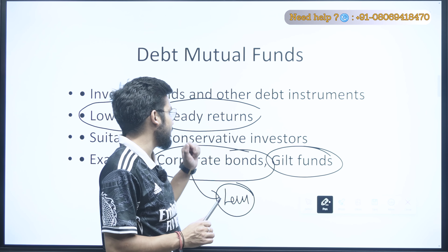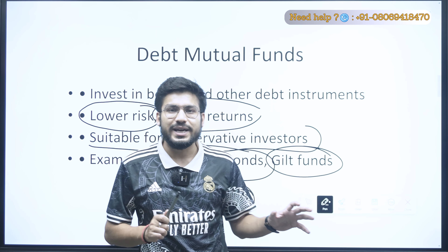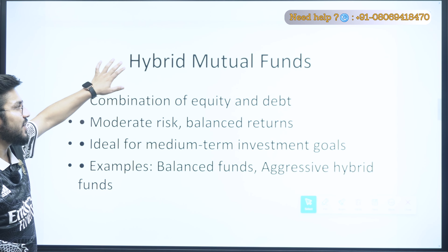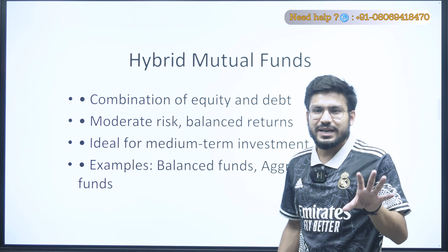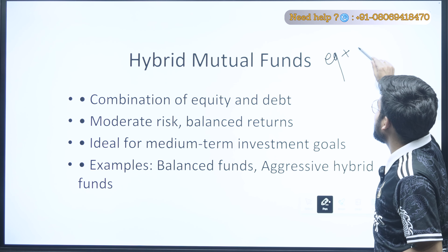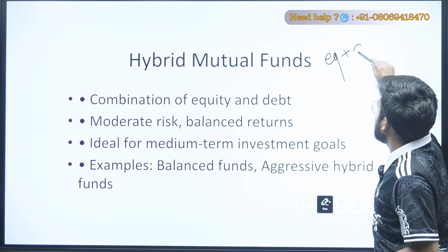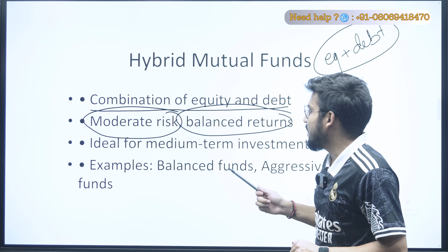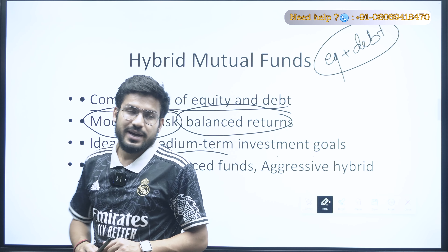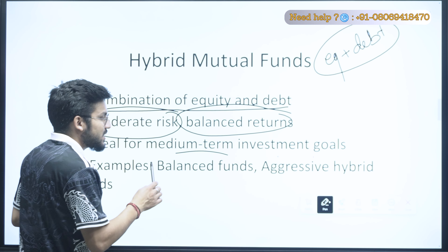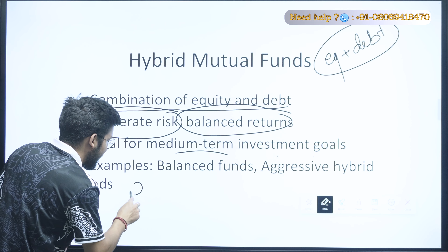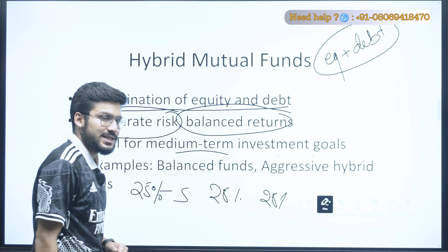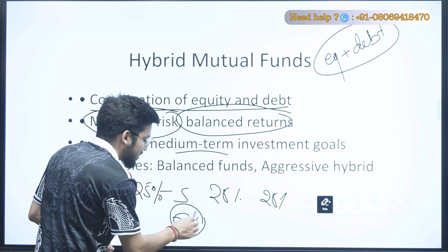The next type is Debt Mutual Funds. These basically invest in corporate bonds or gilt funds — debt instruments. There is lower risk and steady returns because if a company is doing well and you are investing in its corporate bonds, less risk is involved. They can provide good returns over the longer term, though not as much as equity funds. They are suitable for conservative investors who don't want to take much risk.